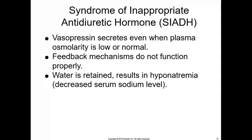Next, we'll discuss syndrome of inappropriate antidiuretic hormone. While diabetes insipidus involves a deficiency of antidiuretic hormone, SIADH is caused when vasopressin or ADH is secreted even when plasma osmolarity is low or normal. With SIADH there is an excessive amount of ADH, so the patient would be urinating less frequently — lots of antidiuretic hormone means anti-urination. Diabetes insipidus and SIADH are opposites of each other, both dealing with the same hormone but different problems.